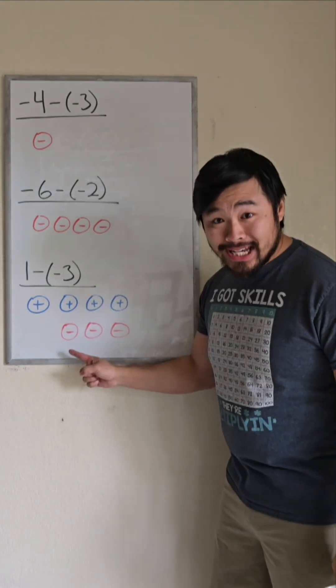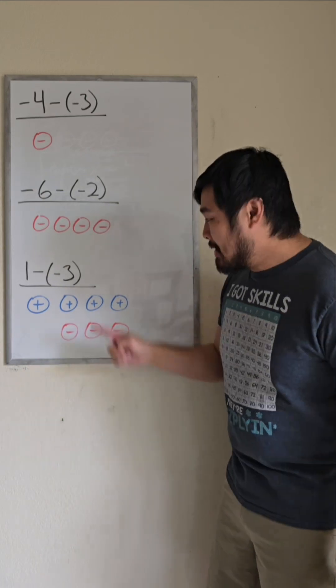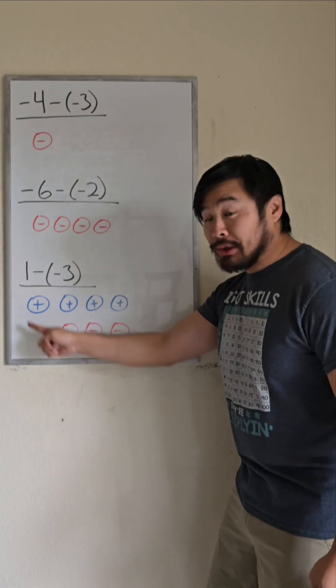You see, positive 1 and negative 1 create a zero pair. So when we add three of these, we still get 1,